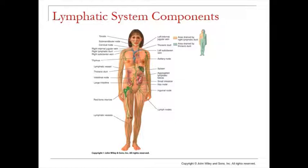You might notice when you get sick — even with a head cold — the doctor rubs your neck. That's because you have lots of little lymph nodes in your neck. When they swell, it's usually a sign your body is fighting some type of pathogen. The spleen is also visible, located in the left upper quadrant of the abdomen, and it plays a role in the lymphatic system.